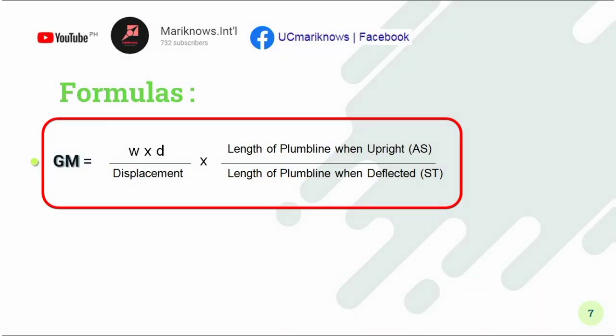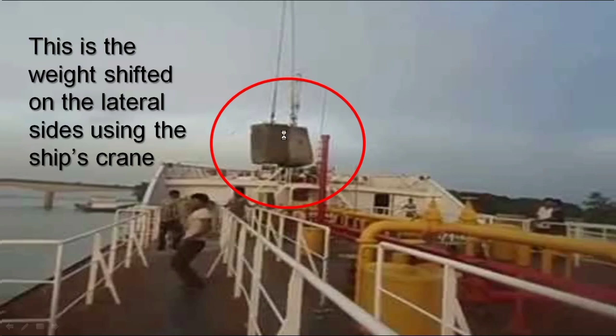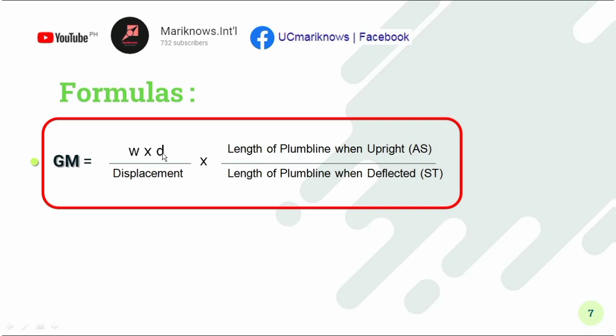These are the formulas we use to calculate the initial metacentric height or GM. The formula is: GM equals weight times distance — where weight is the mass of the shifted object and distance is how far it was moved — divided by the ship's displacement. The displacement we are talking about here is the light ship displacement, multiplied by AS divided by ST, where AS is the length of the plumb line when upright and ST is the length when deflected.